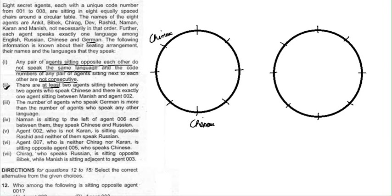The fourth condition says: Naman is sitting to the left of agent 006, and between them they speak Chinese and Russian. So one of Naman or 006 speaks Chinese and the other speaks Russian.